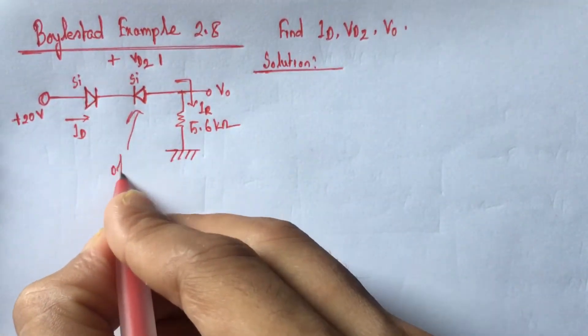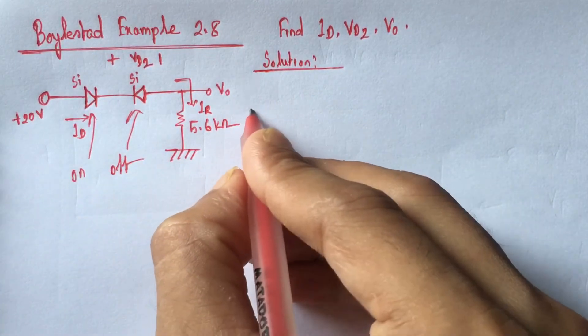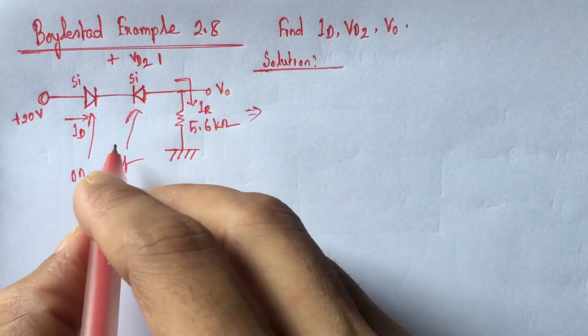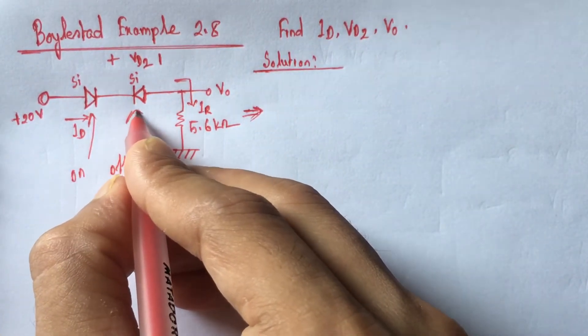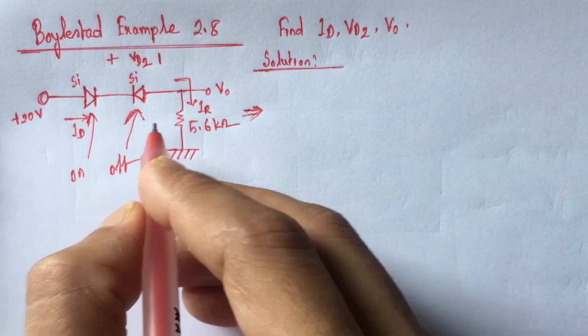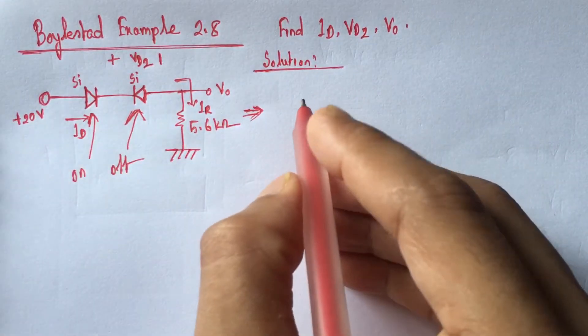So this diode is off and this diode is on. Now if we redraw the circuit after replacing this diode by open circuit and this diode with equivalent drop then it will become